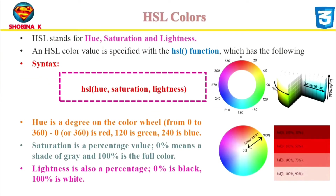HSL stands for hue, saturation, and lightness. The HSL function accepts the HSL value as a parameter, provided as a comma-separated list of three values for the hue, saturation, and lightness components. The hue component represents an angle of the color circle. You can specify the value as an angle in degrees or simply as a number. Hue is a degree on the color wheel from 0 to 360 and refers to the colors we can see. The range of colors visible to the human eye can be charted in a circle, often referred to as a color wheel. For example, blue is at 240 degrees, red is at 0 degrees, green is at 90 degrees, and purple is at 270 degrees.